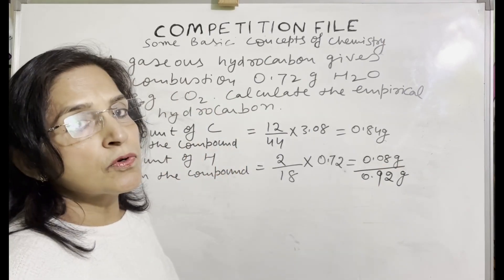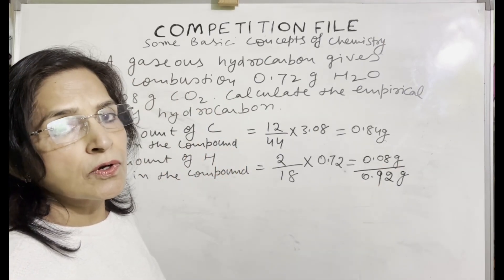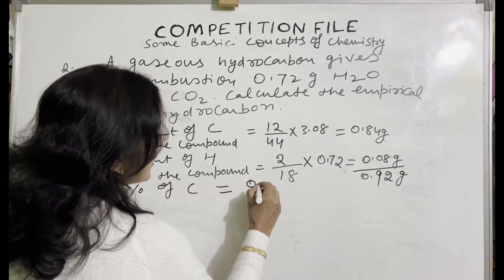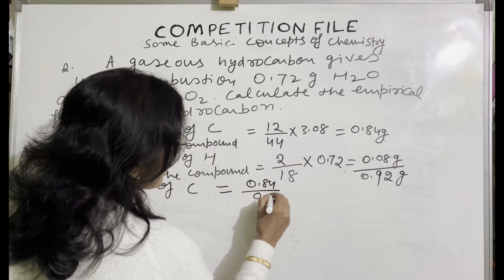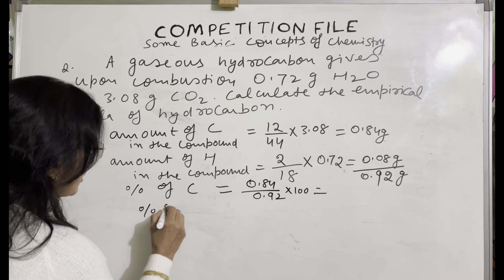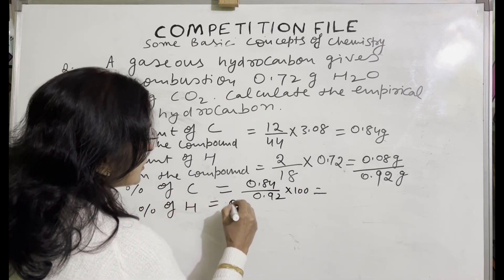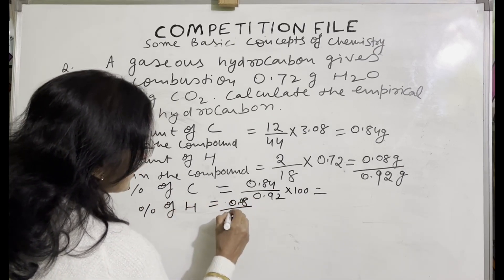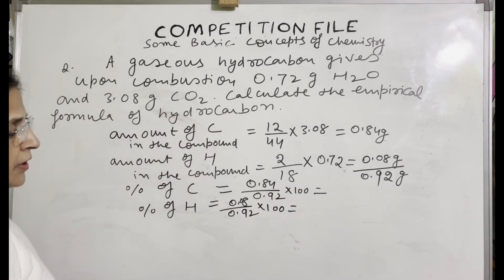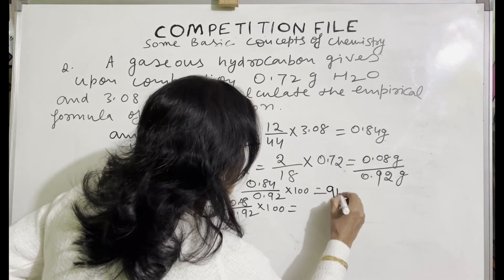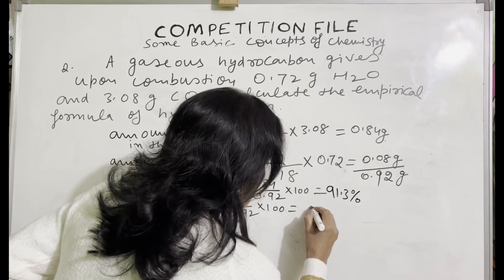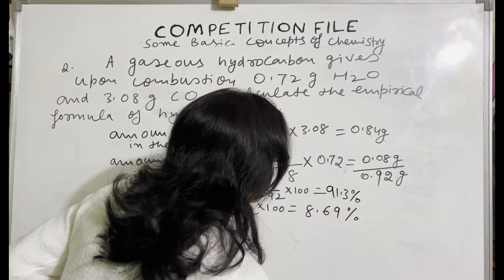Now you will find percentage of carbon and percentage of hydrogen. Percentage of carbon is 0.84 over 0.92 into 100. Percentage of hydrogen is 0.08 divided by 0.92 into 100. Calculate both. The value of carbon comes 91.3 percent and percentage of hydrogen comes 8.69 percent.